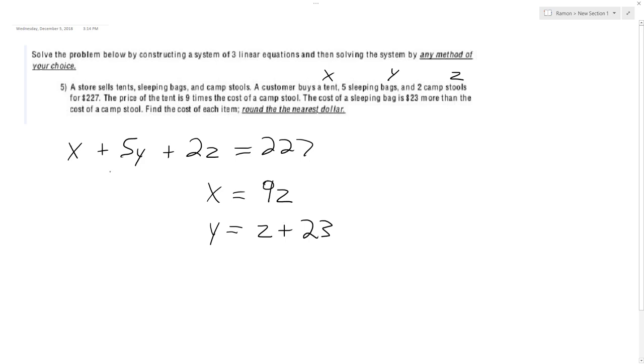We've got everything we need to substitute into the first equation to solve it. So x is going to be 9z plus substitute in for y, z plus 23, plus 2z equals 227.